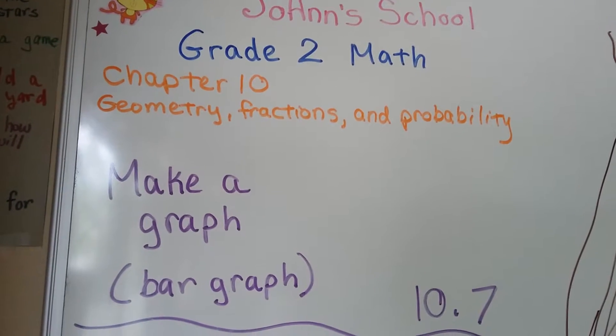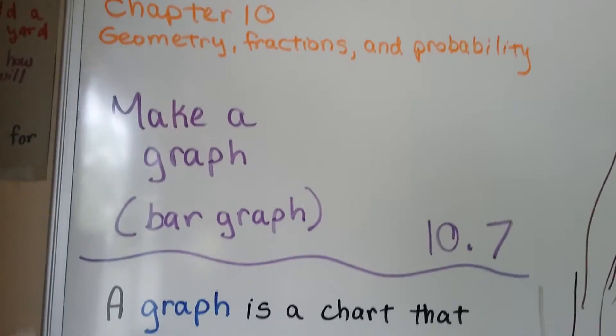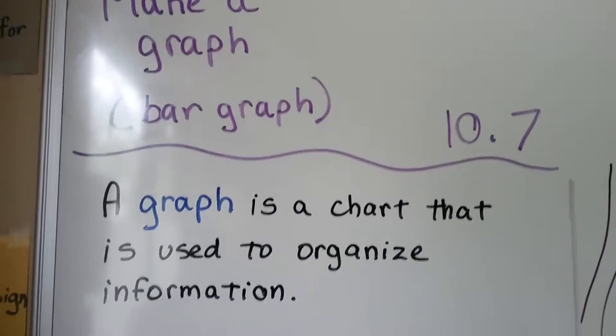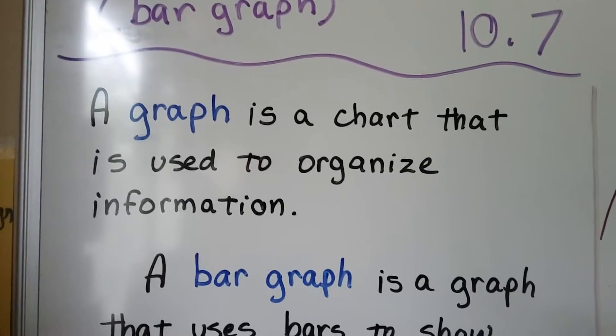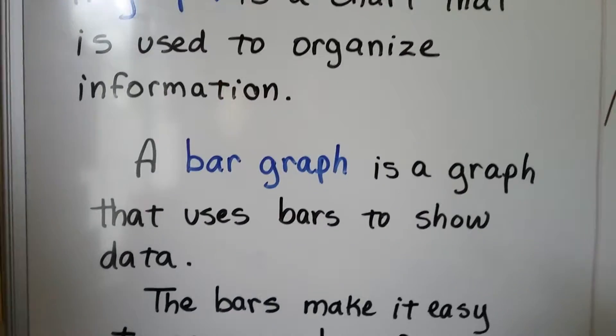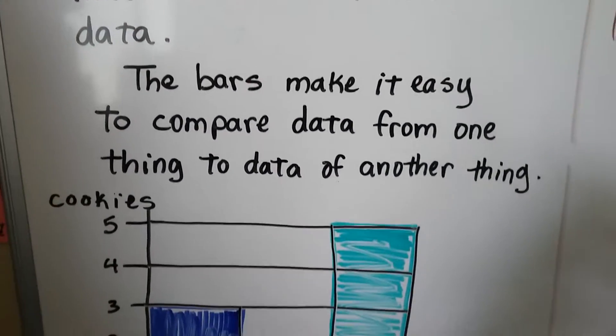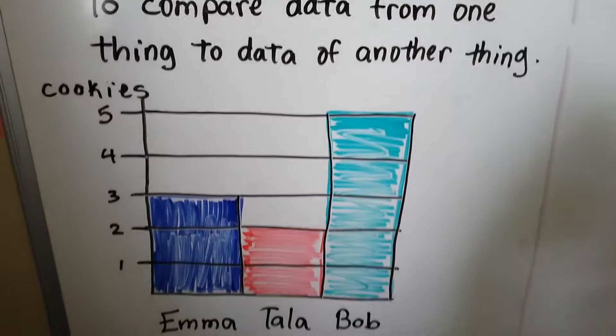We're going to learn about how to make a graph and a bar graph. In this lesson, we're at 10.7. A graph is a chart that is used to organize information. That's data, isn't it? A bar graph is a graph that uses bars to show data. And the bars make it easy to compare data from one thing to data from another thing.